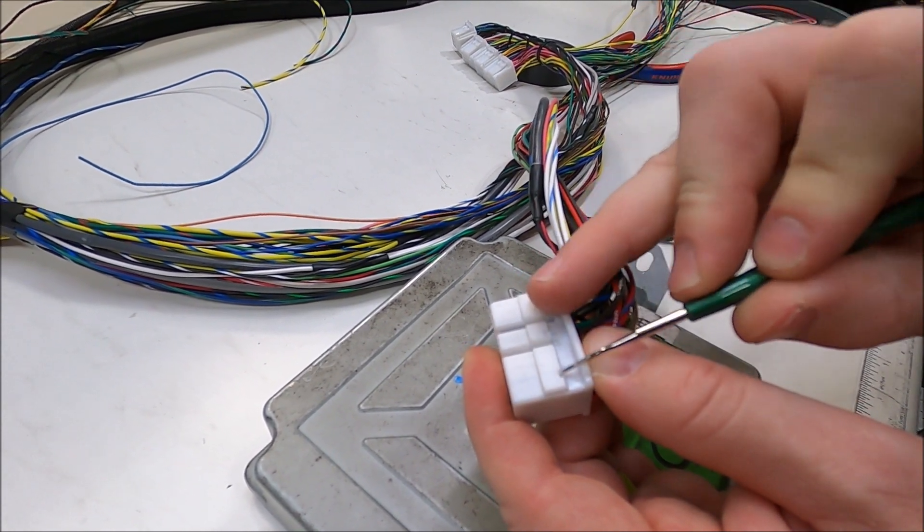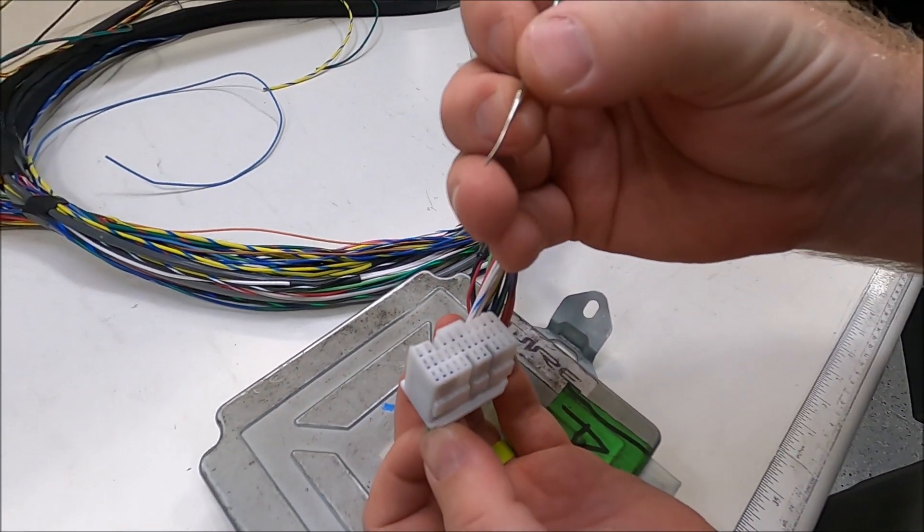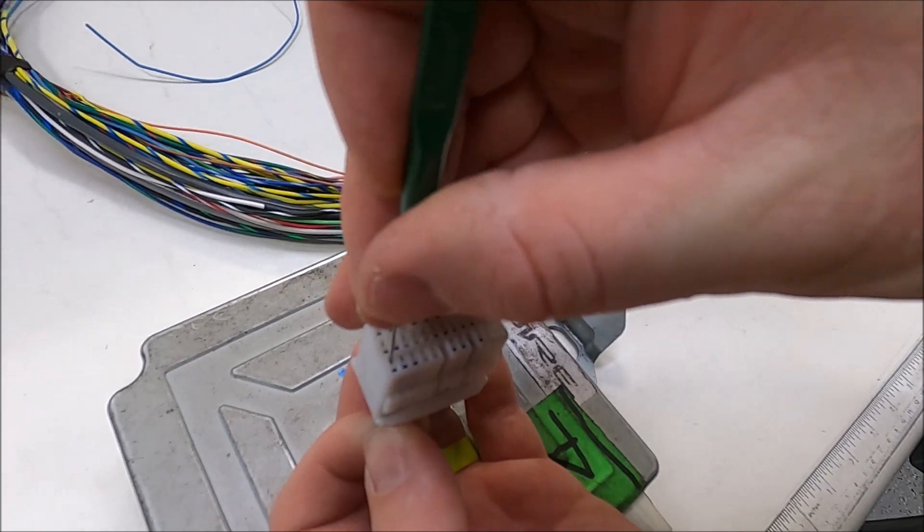So we lift up the tab. I'm going to de-pin this lower left corner. Now with the flat side, there's going to be a release tab.